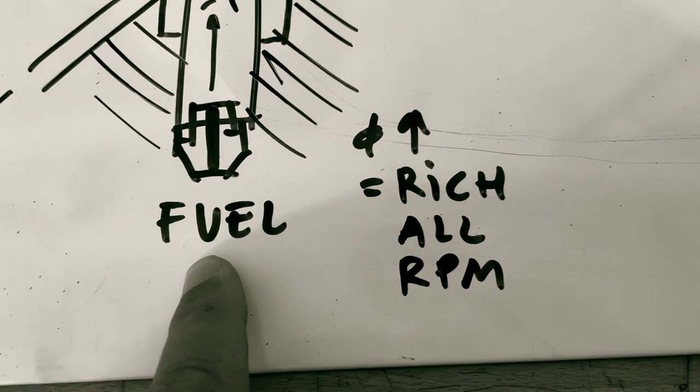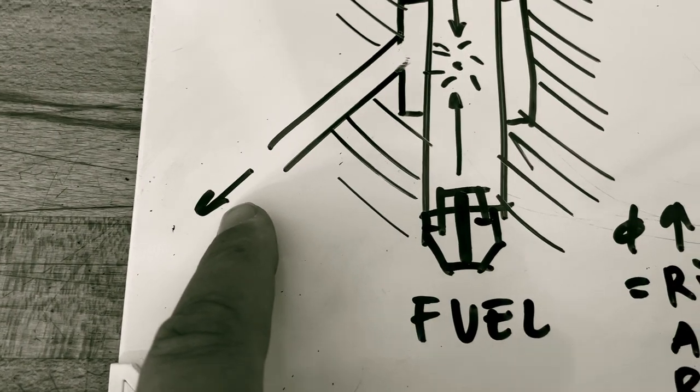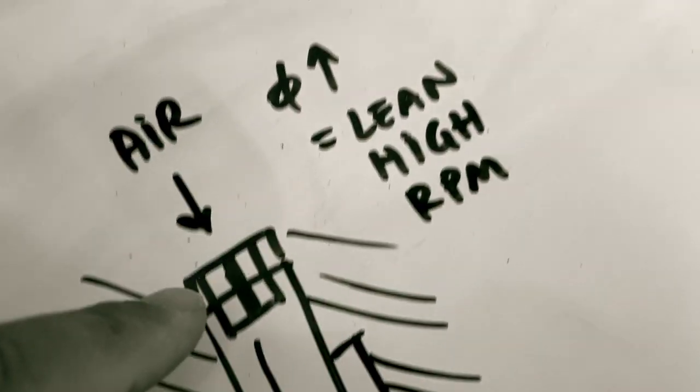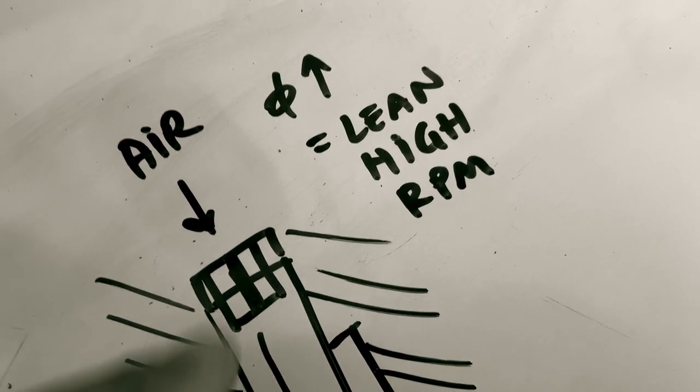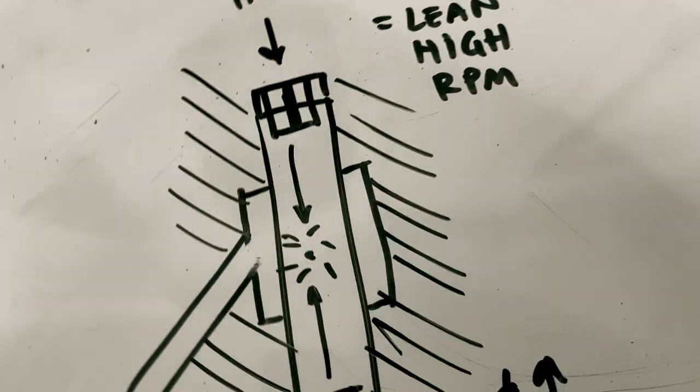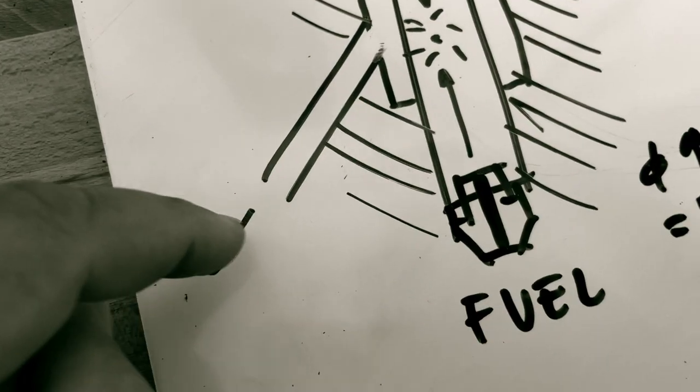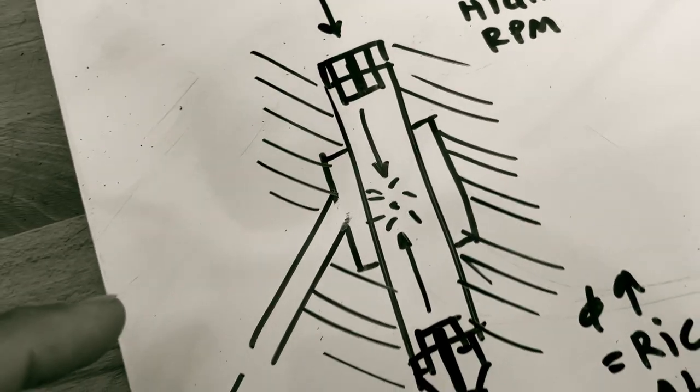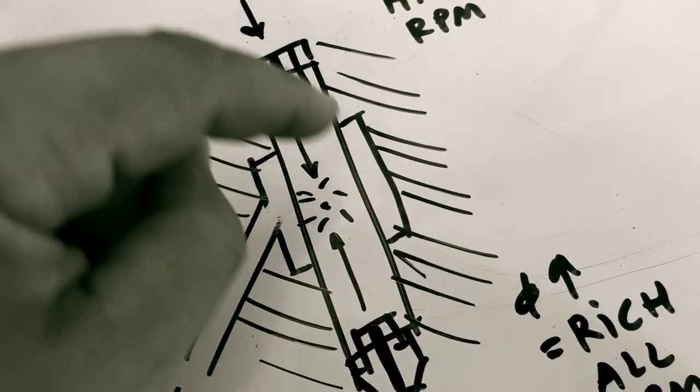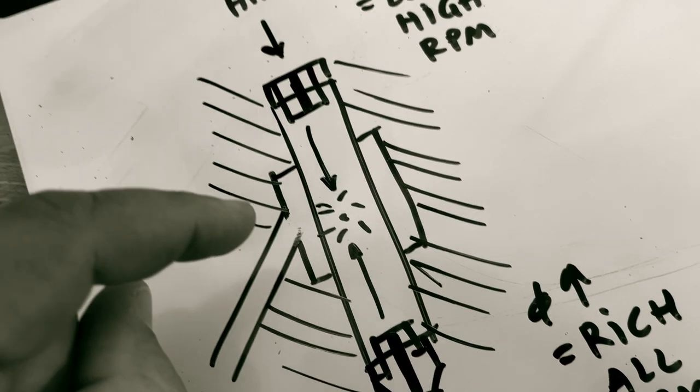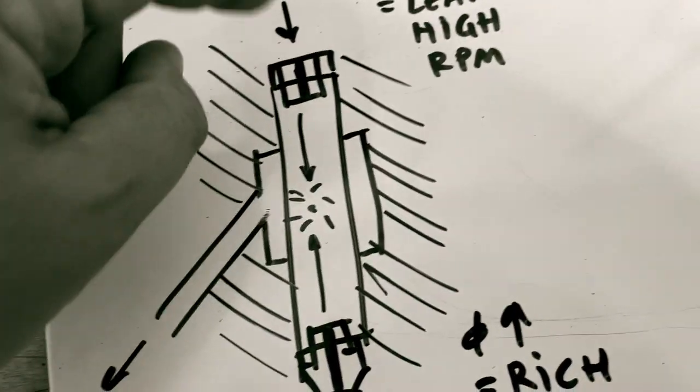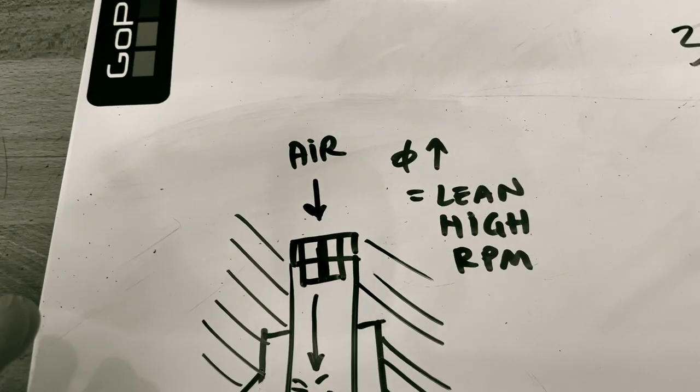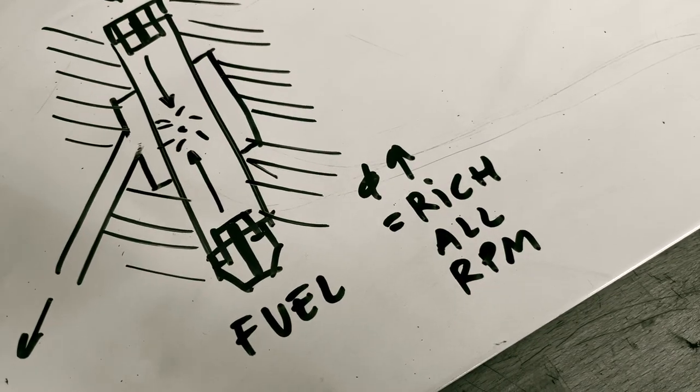Now if we increase the diameter of the fuel jet, we get a more rich mixture here at all RPM. At the other end, if we increase the diameter of the air correction jet, we get a more lean mixture but only at high RPM. This makes sense because the vacuum is generated in the venturi and it pulls fuel through this channel for each barrel. At lower RPM there's not much flow through the barrel and the emulsion tube doesn't really work as well. We also suck a lot of fuel in from what is called the idle system - we'll look at that later. So it's at higher RPM the air correction jet really gets working and the emulsion tube really gets working. So this is a good rule of thumb: lean at higher RPM, rich at all RPM.